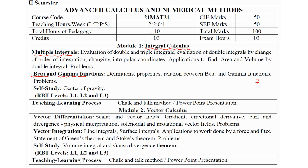When I move on to module 2, vector calculus, there are two topics: vector differentiation and vector integration. If you are not well aware with integration, concentrating only on vector differentiation — gradient, directional derivatives, curl, divergence, solenoidal, and irrotational — you can score a minimum of 14 marks.